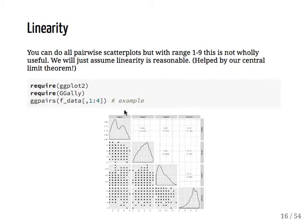Linearity. So you can do, because all these associations have to be linear, it's quite difficult. But you can check that visually. You can do pairwise scatterplots and sort of see if you get a linear pattern. But because it's 1 to 9, you get these type of things. So it's not very useful. So we'll just assume linearity, which is reasonable. And we're also helped a little bit again by our central limit theorem. So the larger our sample sizes, the less we'll have to worry about deviations from linearity and these type of things. Because our assumptions will become more and more robust to deviations from these linearity.